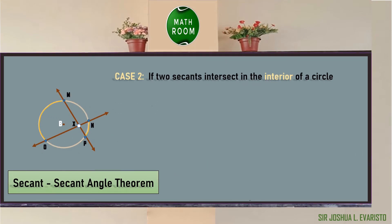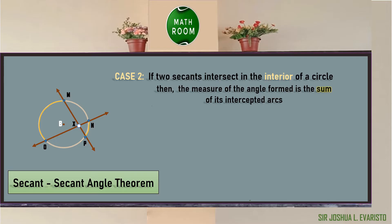Case two: if two secants intersect in the interior of a circle, the point of intersection is inside the circle at point X. The measure of the angle formed is one-half the sum of its intercepted arcs. In circle B, the angle formed is angle MXO, and the intercepted arcs are arc MO and arc NP. So: angle MXO = one-half of (arc MO + arc NP).